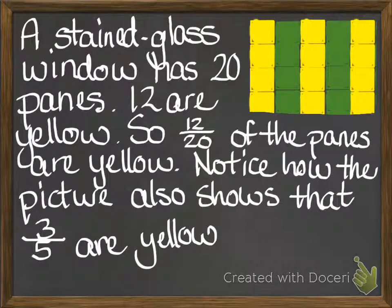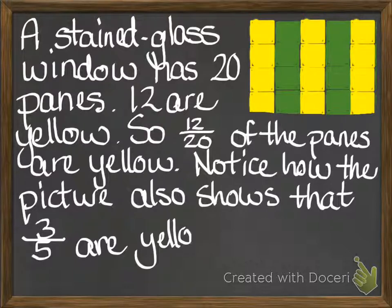Here's our example problem. A stained glass window has 20 panes. You can see here that there are 20 of these small panes in the window. 12 of them are yellow, so 12 twentieths of the panes are yellow.